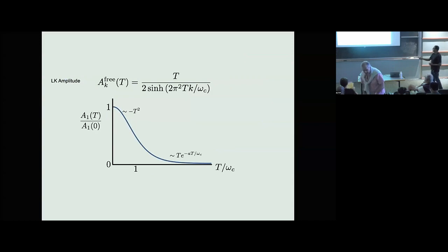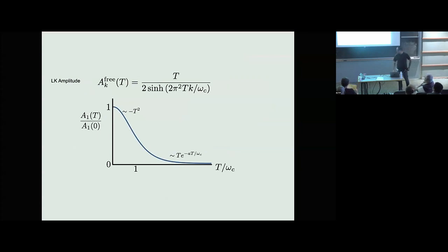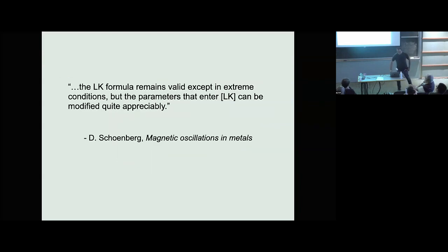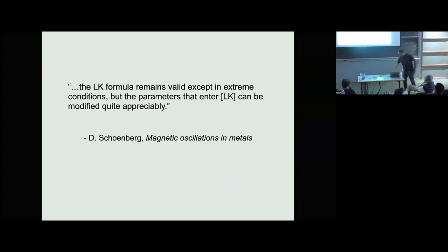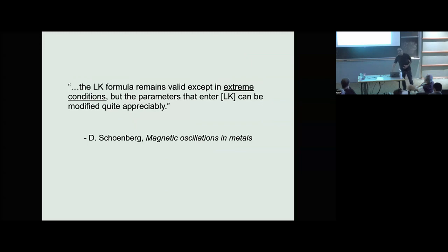If you look at how this amplitude behaves: at low temperatures it is attenuated quadratically in temperature, and at high temperatures it's attenuated as T times an exponential of the temperature divided by Omega_C. The question that naturally arises is: this is the free Fermi gas result — what about interactions? In a classic book by Schoenberg on magnetic oscillations, it says the Lifshitz-Kosevich formula remains valid except in extreme conditions, but the parameters that enter can be modified quite appreciably. This talk will be about one such extreme condition.